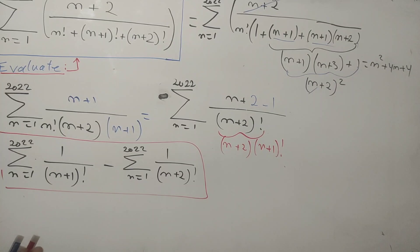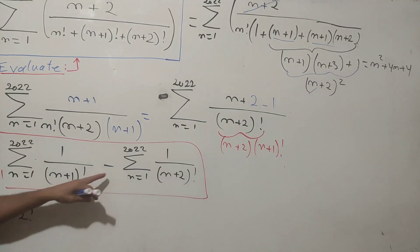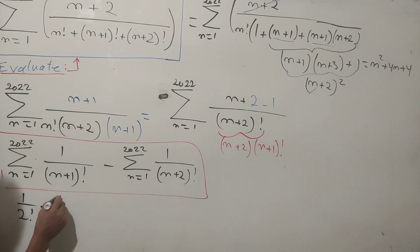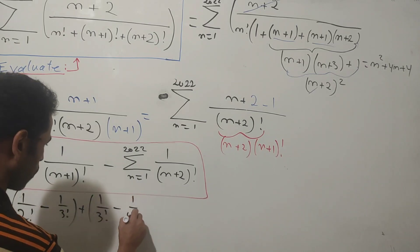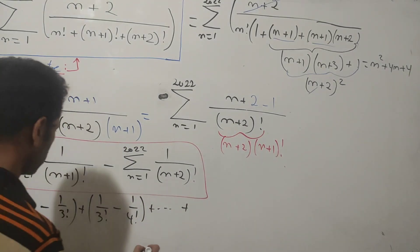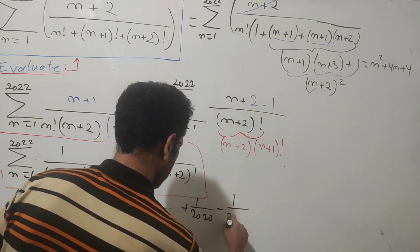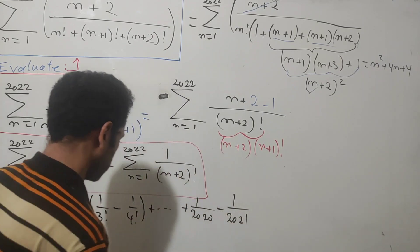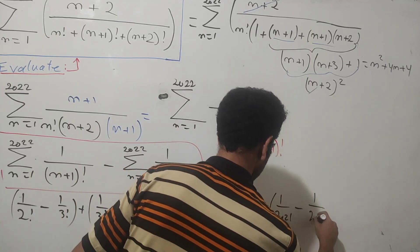Using the telescoping property, replacing n with each value: the first term gives 1 over 2 factorial minus 1 over 3 factorial, the second term gives 1 over 3 factorial minus 1 over 4 factorial, continuing in this pattern all the way down to 1 over 2021 factorial minus 1 over 2022 factorial.